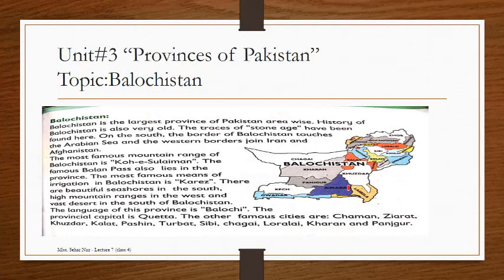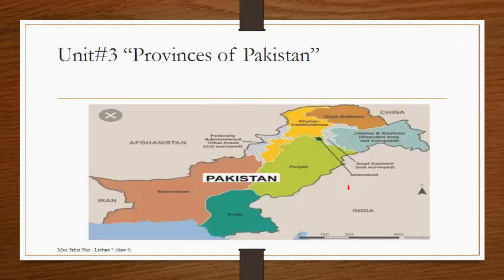The map is also shown here. Next is Pakistan's geographical position. Two provinces — Balochistan and Sindh — share borders with the Arabian Sea in the south. Iran is to the west, Afghanistan is to the north west, China is to the north east, and India is to the east.